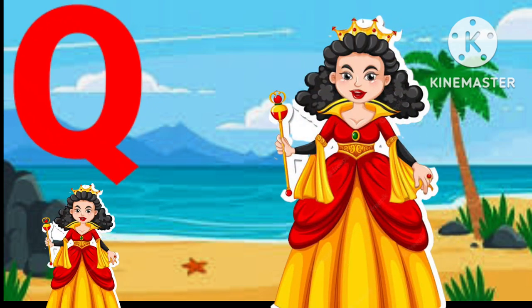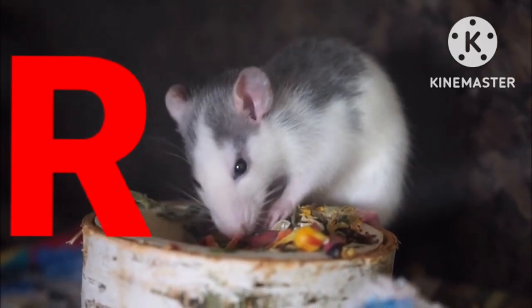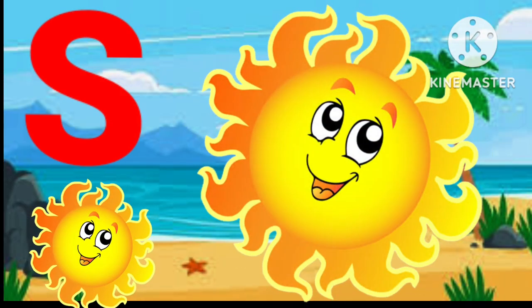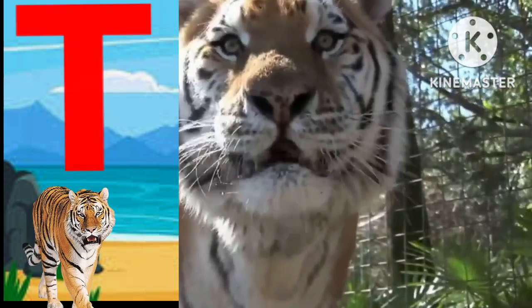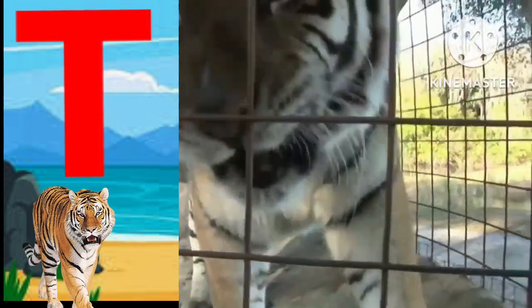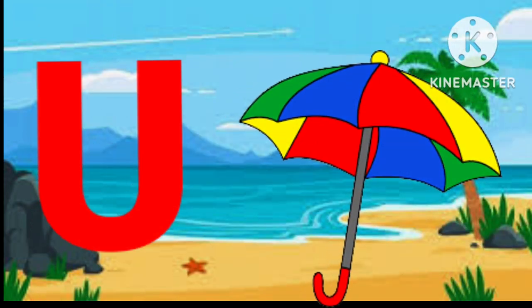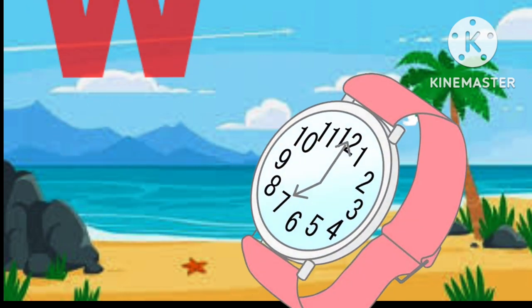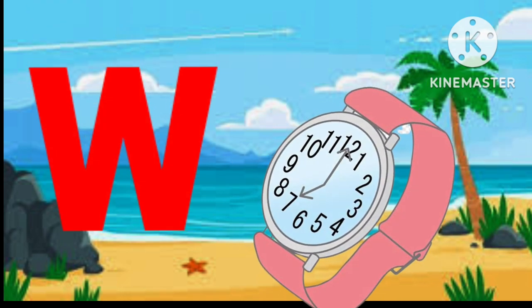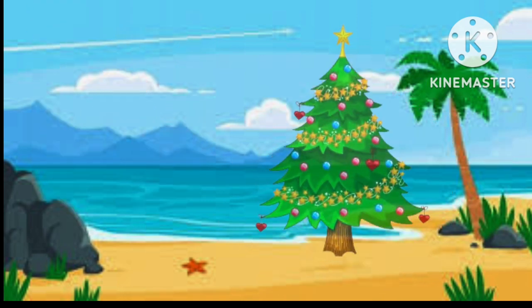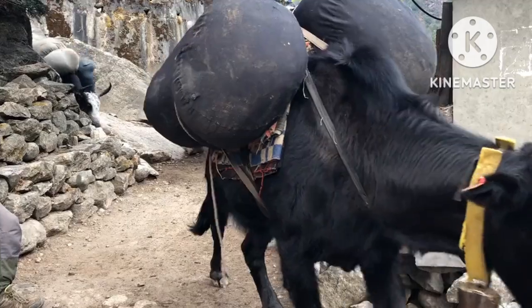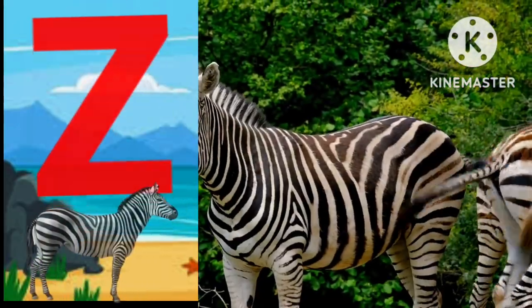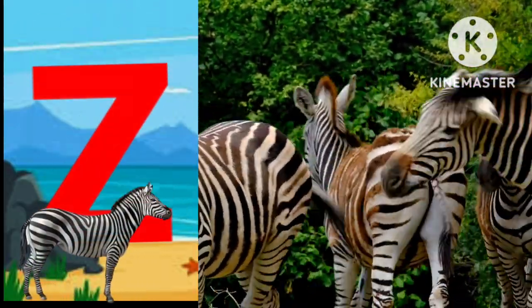Q for queen, R for rat, S for sun, T for tiger, U for umbrella, D for band, double for vase, X for exhaustive, Y for yak, Z for zebra.